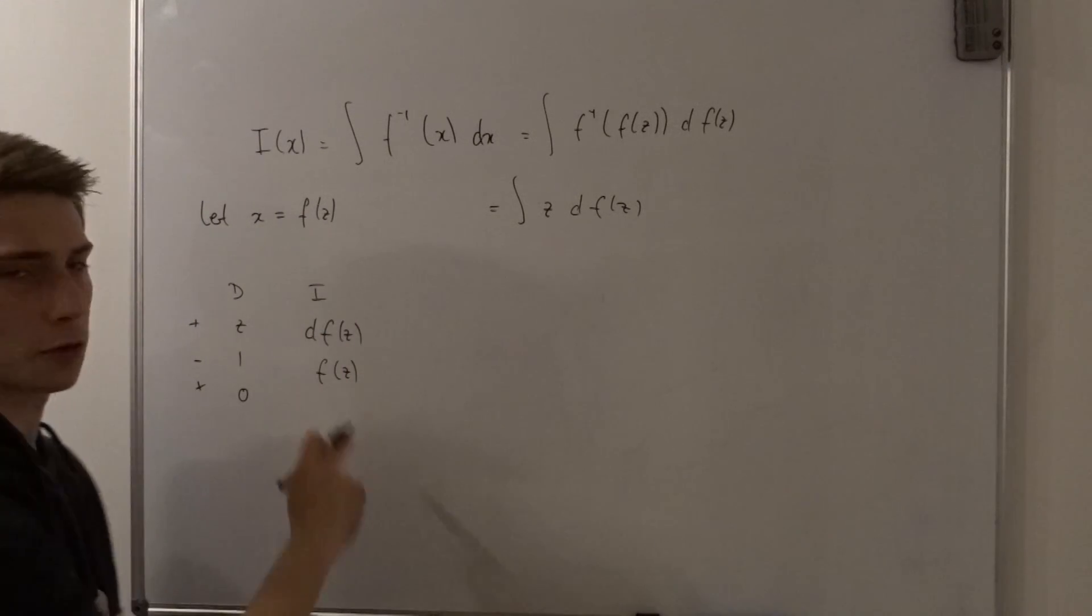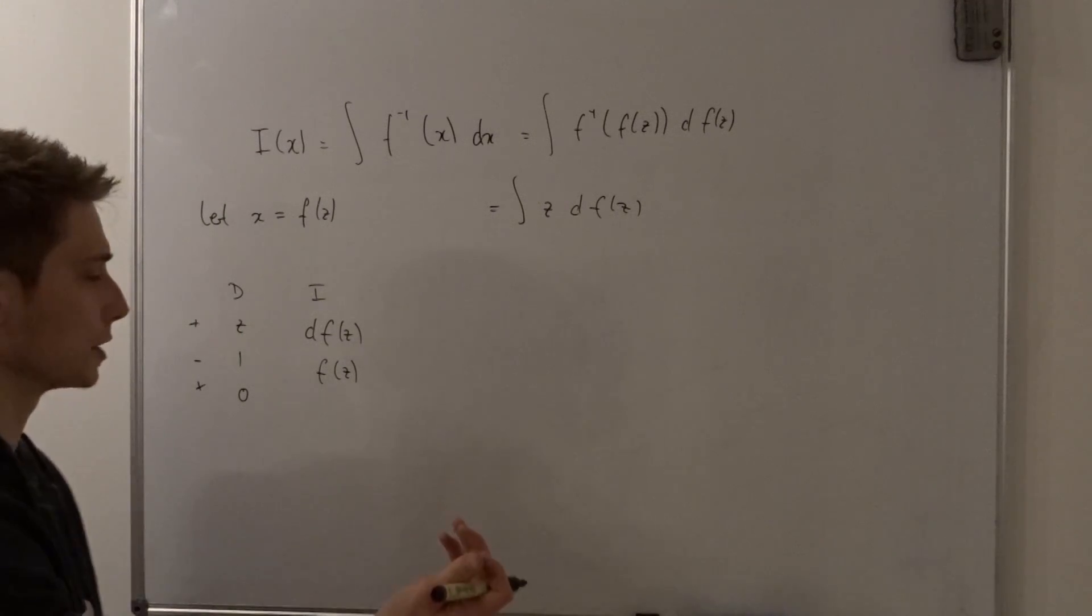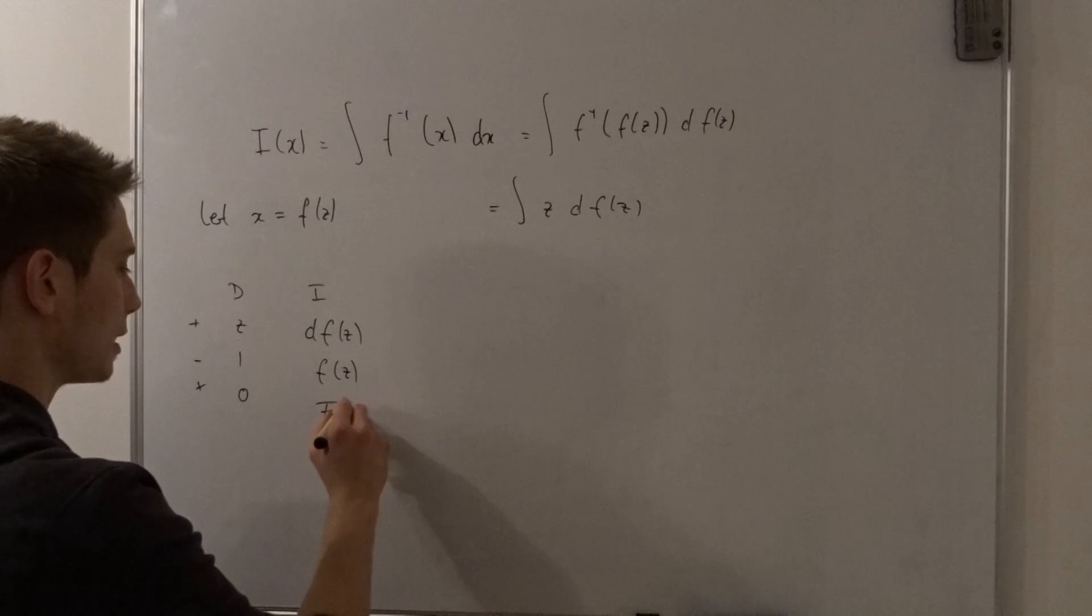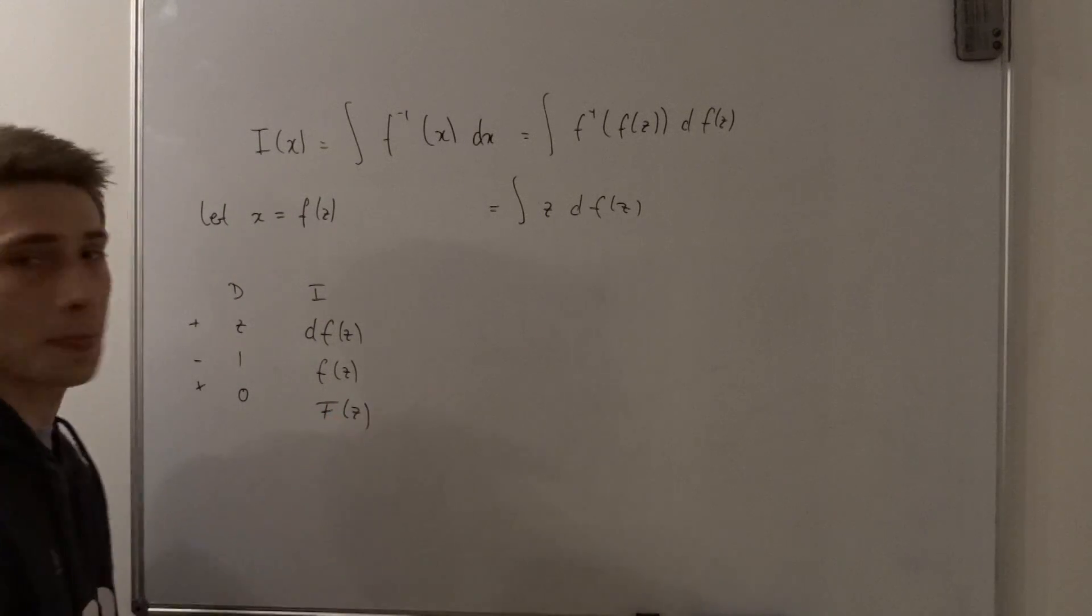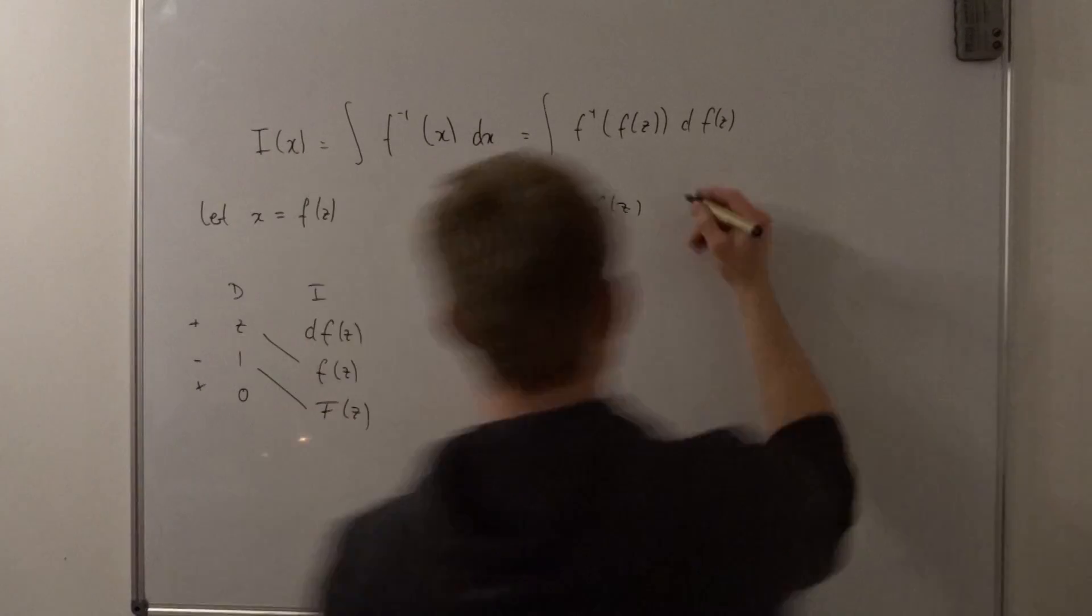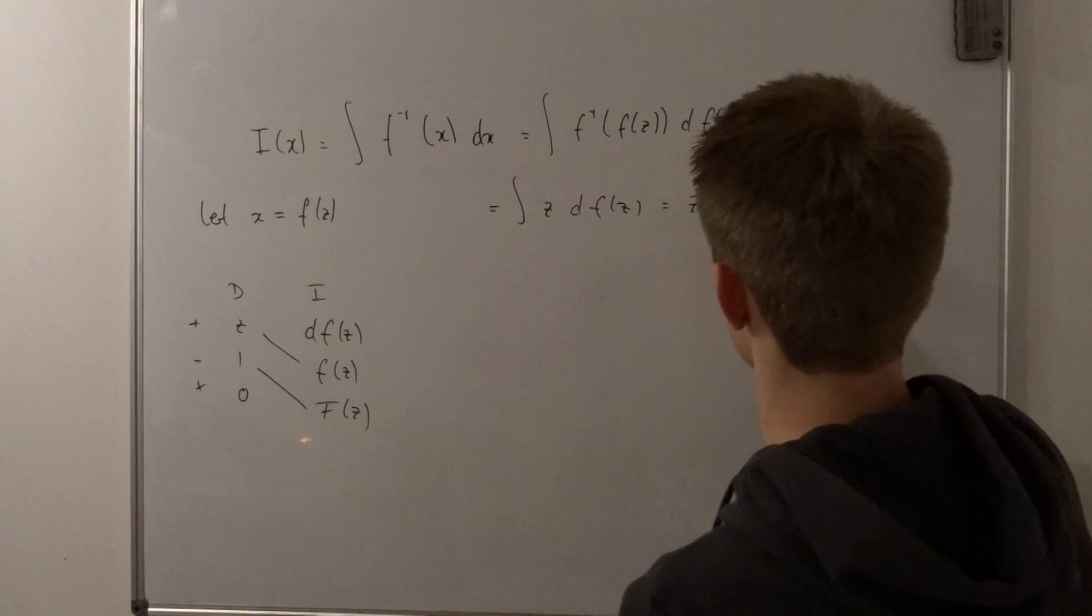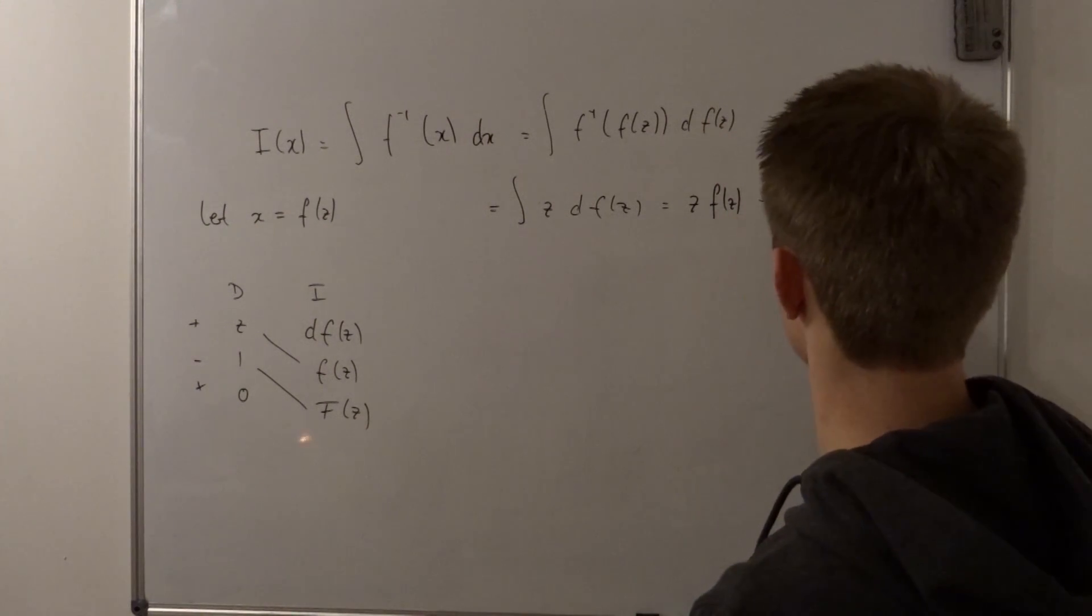And if we integrate f(z), well, let's just say that there exists a primitive of this function. So we end up with capital F(z). And now we can plug everything in. We multiply those two and add them together. So what we end up with is z·f(z) - F(z).